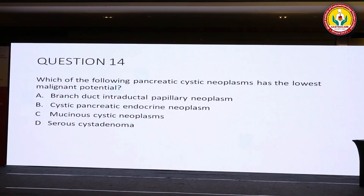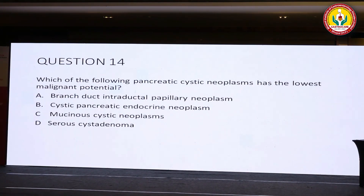Question number 14: which of the following pancreatic cystic neoplasms has the lowest malignant potential? Option A: branch-duct IPMN. Option B: cystic pancreatic endocrine neoplasm. Option C: mucinous cystic neoplasm. Option D: serous cystadenoma. This should be among the easier questions for the postgraduates.